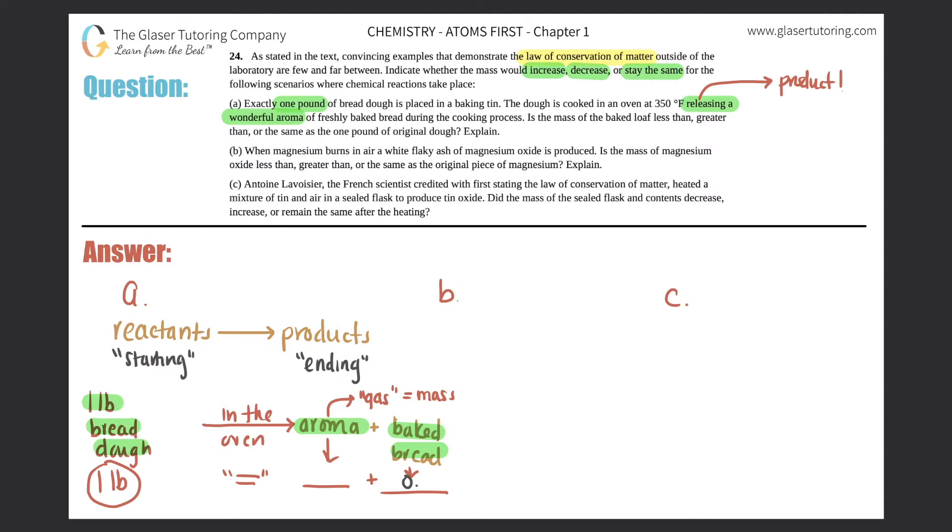Now remember, aroma is a gas. We cannot see it, but we can smell it. And just remember, even though gases are super small, there's still molecules and atoms there which account for mass. So if there's one pound here and you're releasing two things, the combination of these two things, the aroma and the baked bread, all have to equal the one pound. So it definitely has to be less than one pound. The mass of the baked bread would be less than. That's the answer to the first one, because you have to account for the releasing of the aroma.